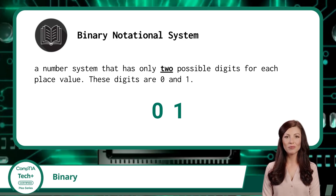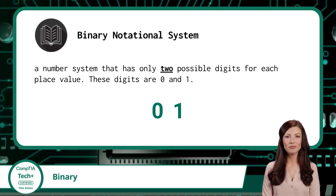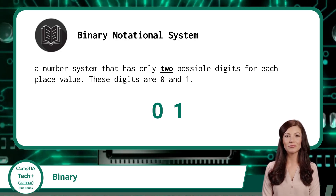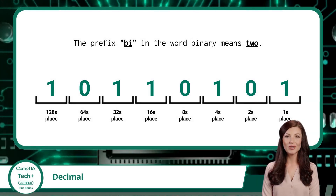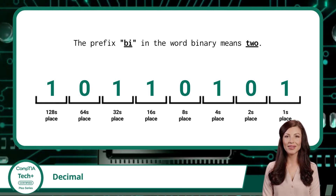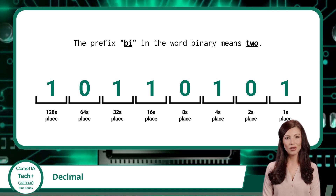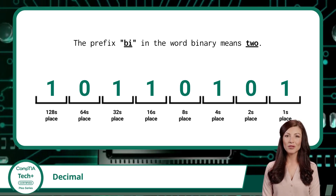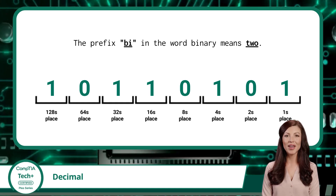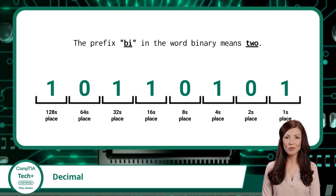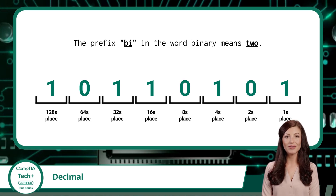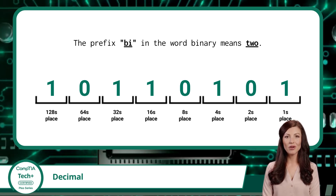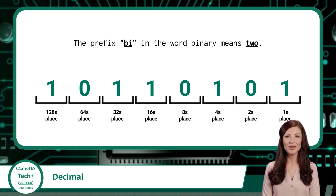Binary is a number system that has only two possible digits for each place value. Those digits are 0 and 1. And just like the prefix DEC in the word decimal means 10, the prefix BI in binary means 2. You'll see this same prefix in words like bicycle, which has two wheels, or biweekly, which describes something that happens every two weeks. That prefix reminds us that binary is all about two options, which is why you won't find the digits 3, 4, 5, 6, 7, 8, or 9 in binary — just 0 and 1.